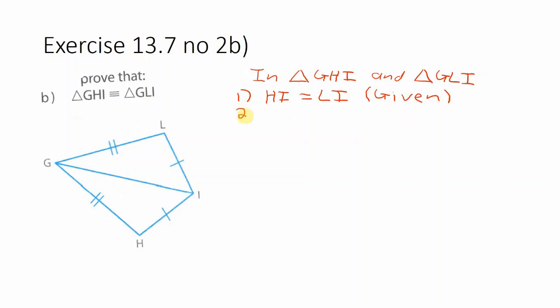So secondly, we can look at GH. GH equals GL. You see they both have the two lines, so they are equal. So again, this was given to us.